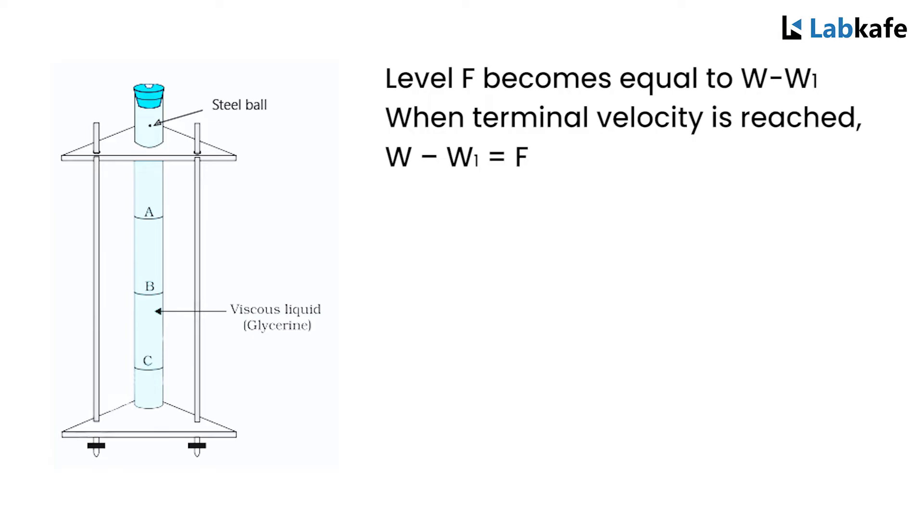When terminal velocity is reached, W minus W1 equals F. We can say 4/3 pi r cubed times (rho minus sigma) g equals 6 pi eta rv. Therefore, eta equals 2/9 r squared times (rho minus sigma) times g by v. Knowing r, rho, sigma, and measuring v, eta can be calculated.